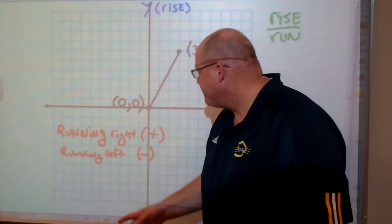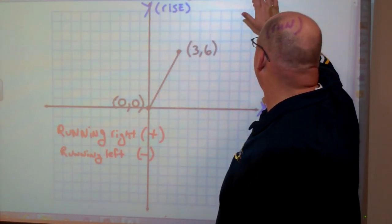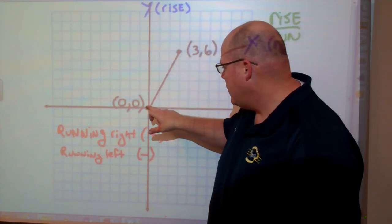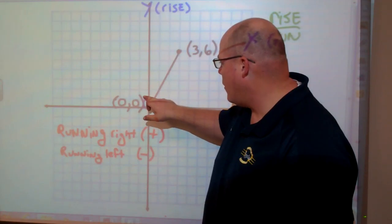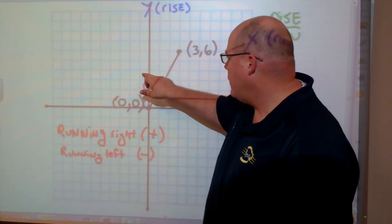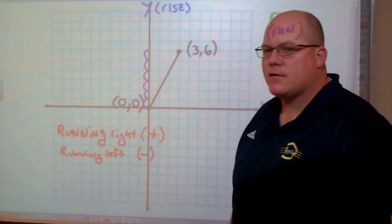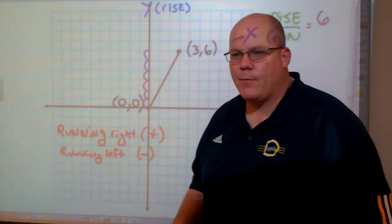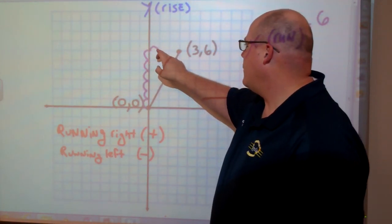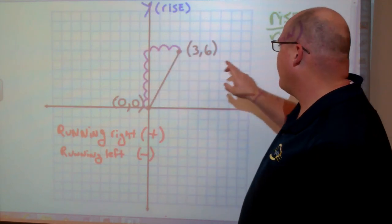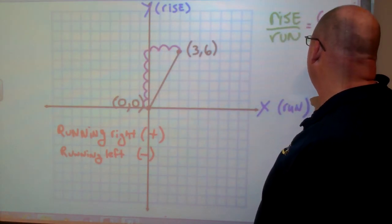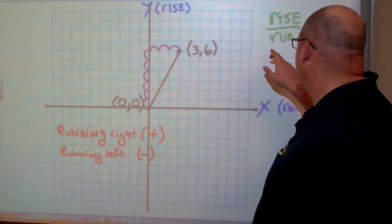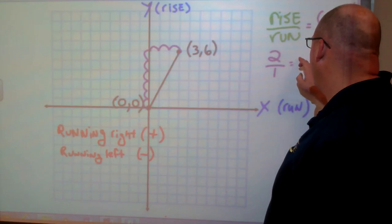So we're going to do rise over run. I'm going to start at my lowest point and work up, counting how many do I rise: 1, 2, 3, 4, 5, 6. So I rise 6. Now let's see how many we run: 1, 2, 3. So I'm running 3. My rise over run, or my slope, would be 6 over 3. We would simplify that down to 2 over 1, or 2.